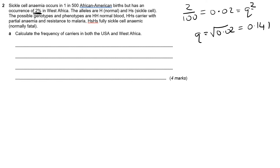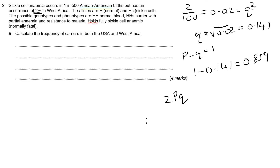The exam doesn't tell us any particular decimal places or significant figures, so I'm going to stick to the rule of three. P plus Q equals 1, so 1 minus 0.141 gives us a value for P of 0.859. Then we simply work out our carriers: 2PQ, which is 0.141 multiplied by 0.859 multiplied by 2.